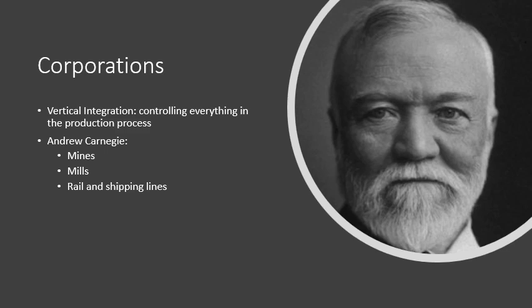What you really see is the growth of what's known as vertical integration — controlling everything in the production process. You can see that with Andrew Carnegie. Carnegie owned the mines to mine iron ore, owned the mills to turn that iron ore into steel, and owned the rail and shipping lines to ship that steel to market. By owning all of that, his corporation was able to grow greatly.